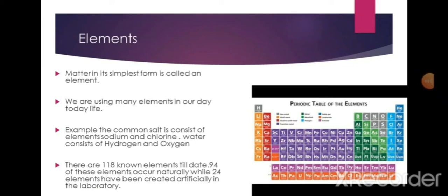The simplest form of matter is called an element. We use many elements in our daily life. Common salt consists of elements sodium and chlorine. Water consists of hydrogen and oxygen. Magnesium and phosphorus are used for making crackers. Sulfur is used as manure in agriculture. Gallium is used for making mobile phones and silicon is used for making computer chips.